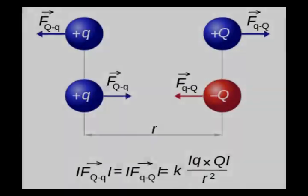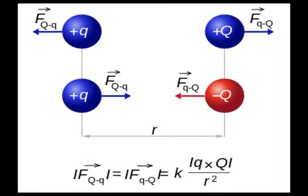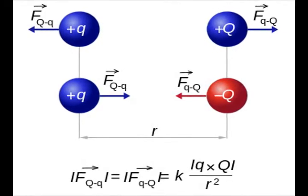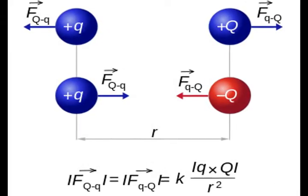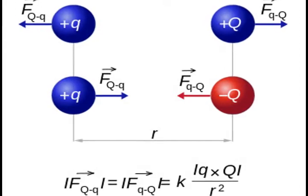The Coulomb Law of Attraction of Opposites and Repulsion of Likes has no relationship whatsoever to natural law. Nature does not attract nor does it repel.